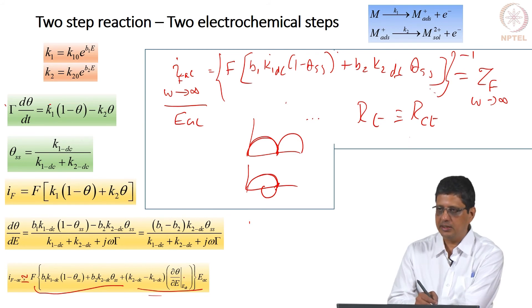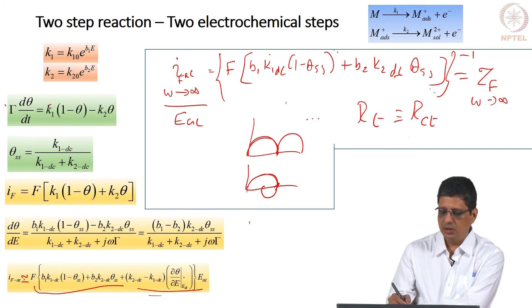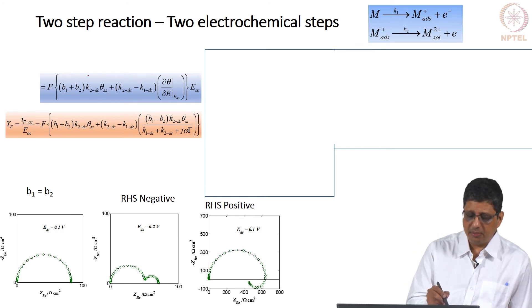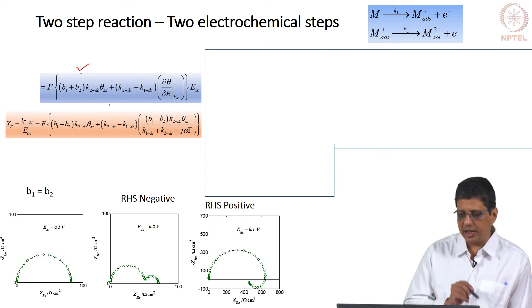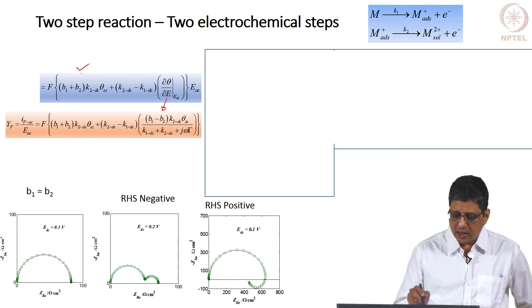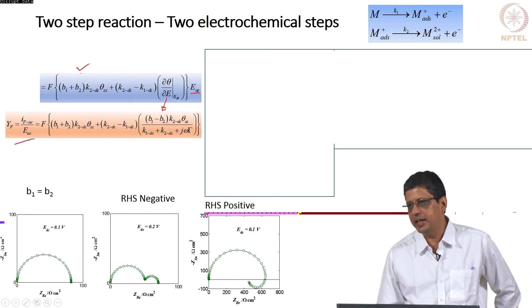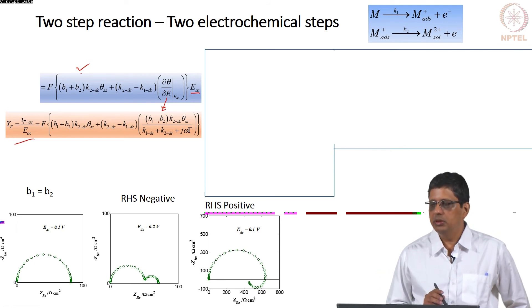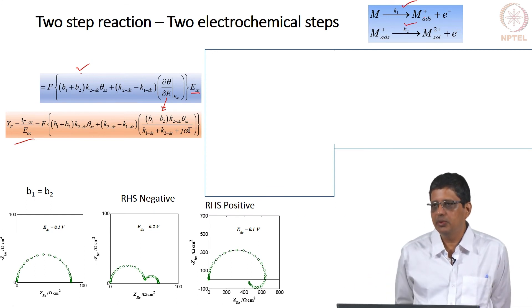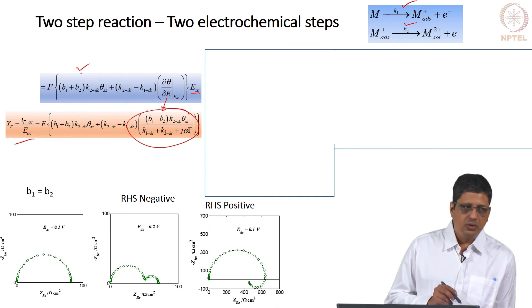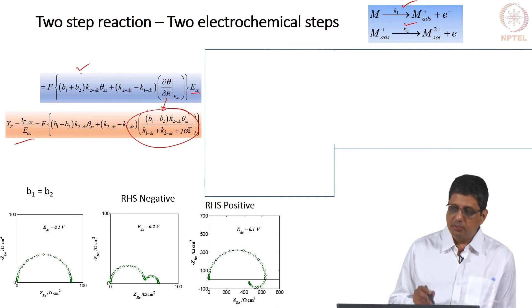Substituting d(theta)/dE and rearranging gives the faradaic admittance. Now if b1 equals b2, the numerator of d(theta)/dE goes to 0, so d(theta)/dE = 0. When b1 = b2, the faradaic impedance is independent of frequency — it is a pure resistor. For a set of parameters with b1 = b2, the impedance will show a semicircle regardless of DC potential.